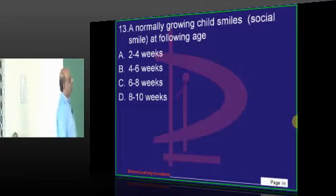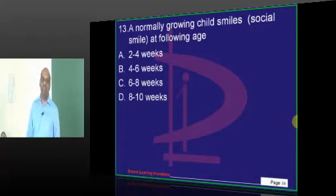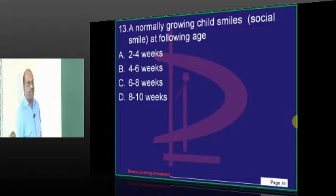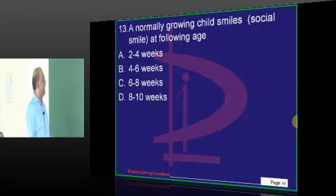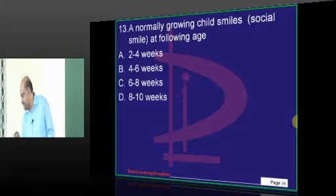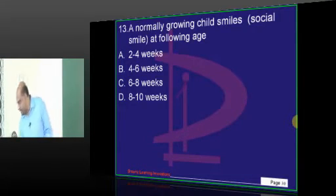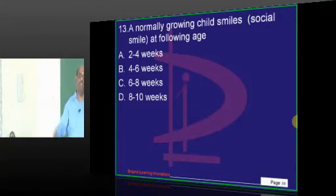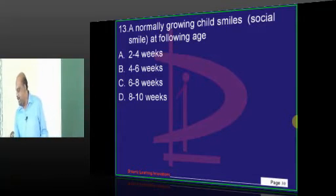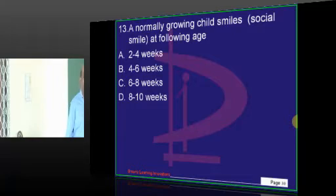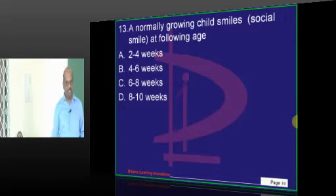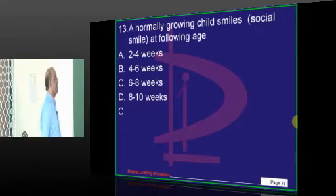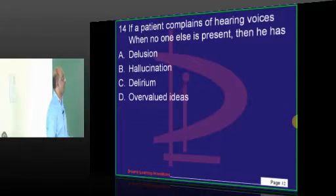When will the social smile appear? It is not 4 months — it is 6 to 8 weeks. Dr. Amrita proposes C, Demo also proposes C, which is correct. 6 to 8 weeks is what you have to basically remember for the social smile.